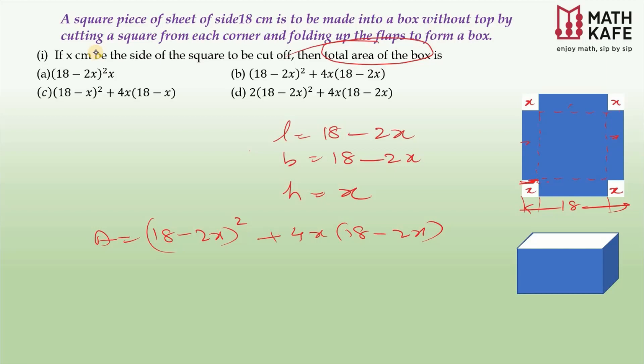You can visualize it as sitting in a square room where the floor has length and breadth both equal to 18 minus 2x, and all the wall sides have height x. So the total area of the open box is base area plus area of the four walls: (18 − 2x)² + 4x(18 − 2x). This corresponds to option B — that's the first answer.